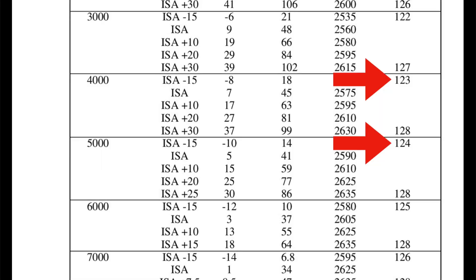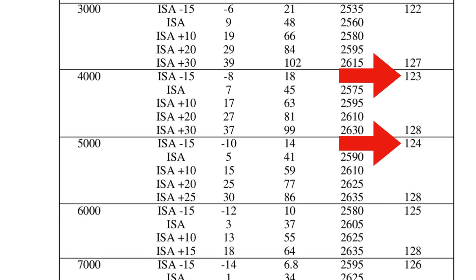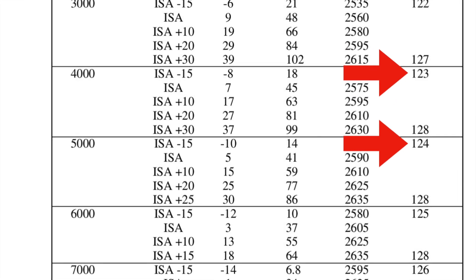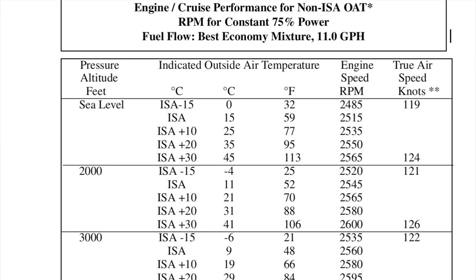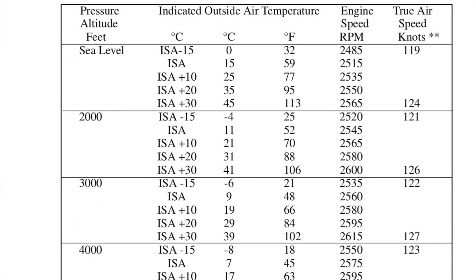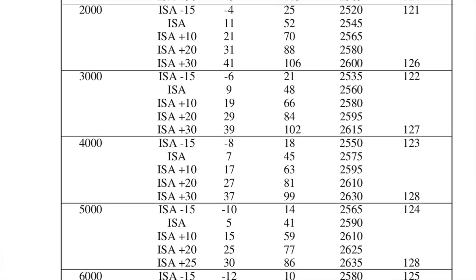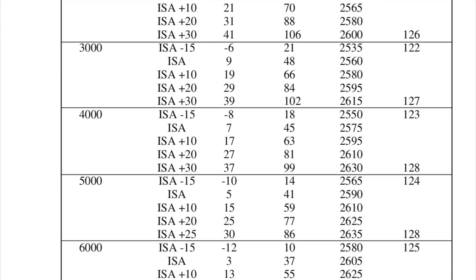In this case, the lower altitude is pessimistic because it has the same fuel burn but a lower true airspeed range. Now refer to the chart. The chart requires us to estimate the temperature at altitude to determine the RPM settings used to get 75% power. To do that, we'll start with the ground temperature and use the standard lapse rate to estimate the temperature at 4,000 feet.